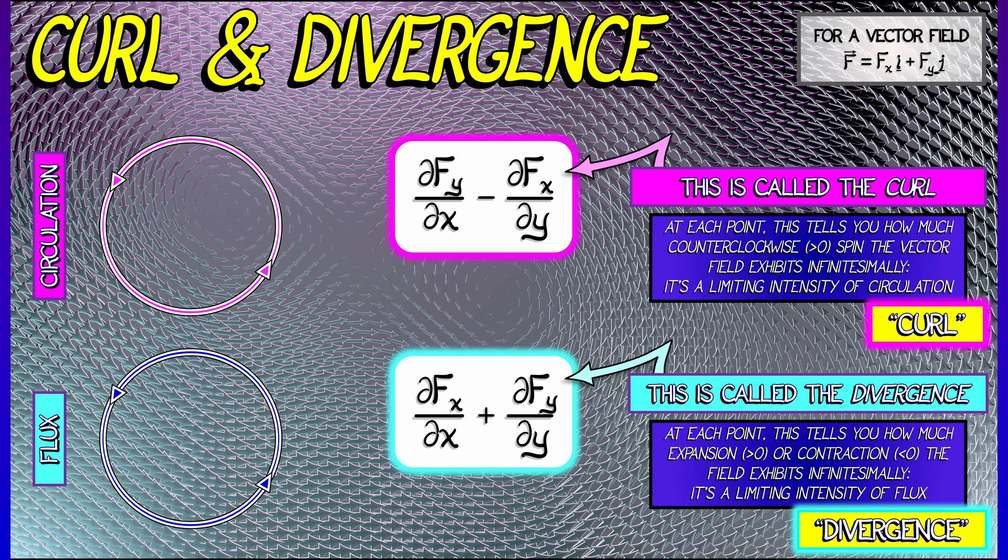Again, think in terms of a small circle. And integrating this flux one form along that circle is, by Green's theorem, computing the net flux through the disk. If you look at the rate as I shrink that circle down to a point, then we get this density, this divergence, and that is telling you this limiting intensity of flux.